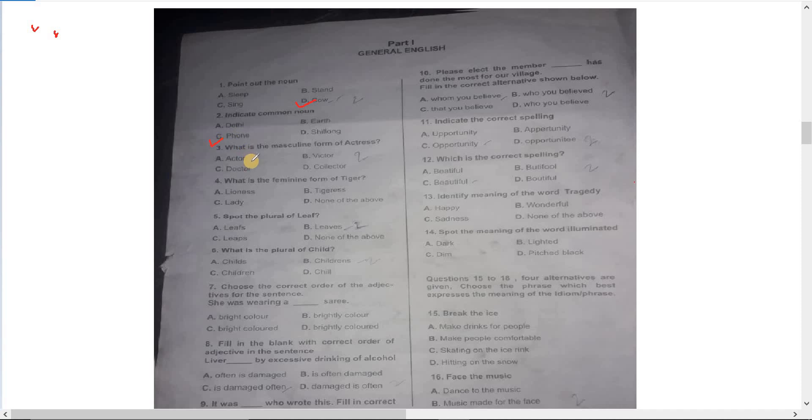Number three: what is the masculine form of actress? You know, actor. Number four: what is the feminine form of tiger? Tigress - you know the spelling. Tiger, tigress. Number B.